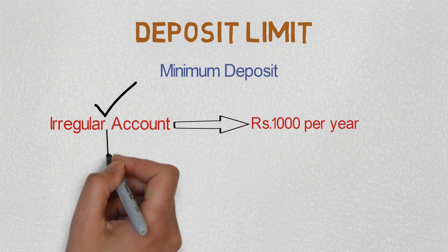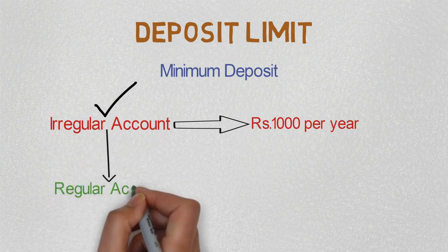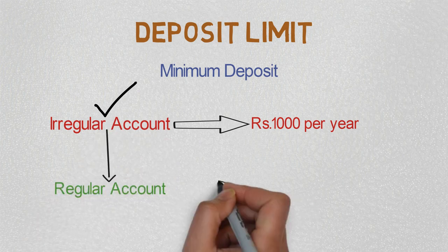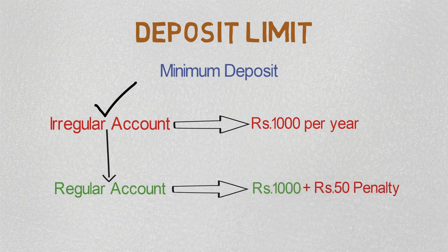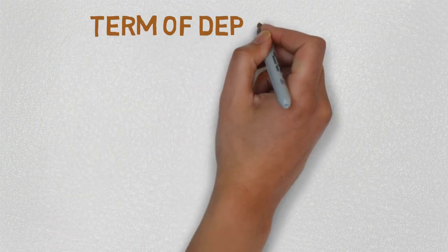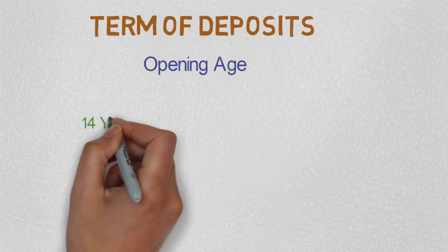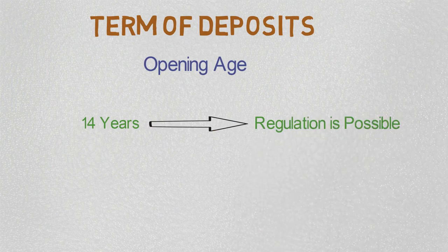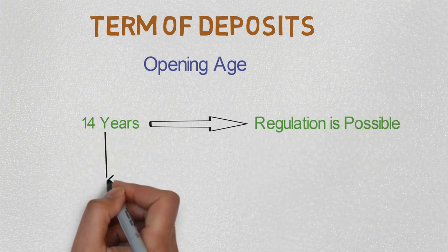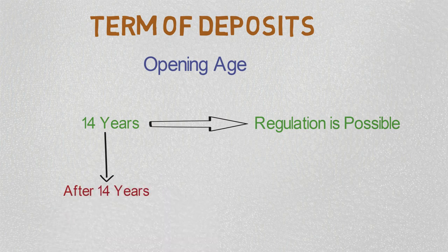To transform the irregular account into a regular account, you have to deposit rupees 1,000 every year plus rupees 50 as penalty. It can be done during 14 years of account opening. After completion of 14 years, an irregular account cannot be changed into a regular account.